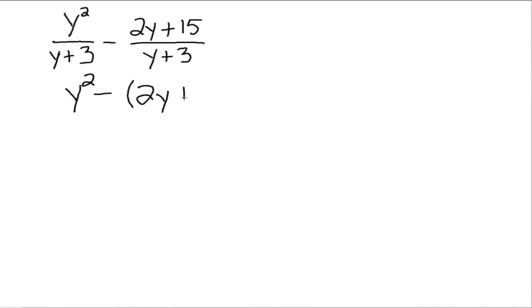This is just to denote that, yes, we are subtracting this entire expression away from the y squared. All of that is still over y plus 3. And then we're just going to treat this like we were before. Simplify up the numerator. So distribute the negative 1 through. So you get minus 2y minus 15, still all over y plus 3.